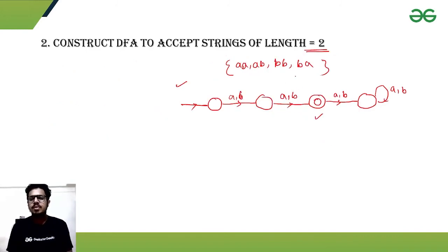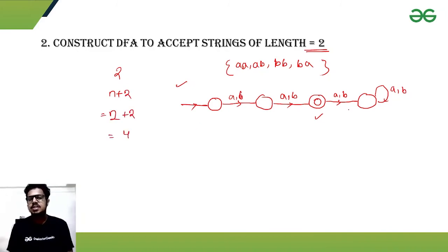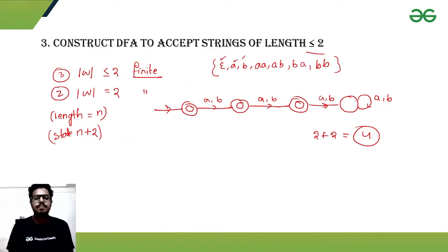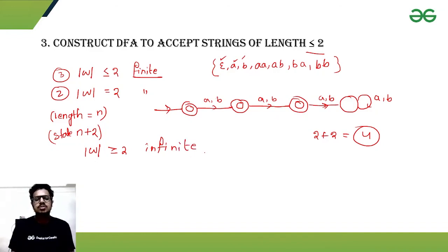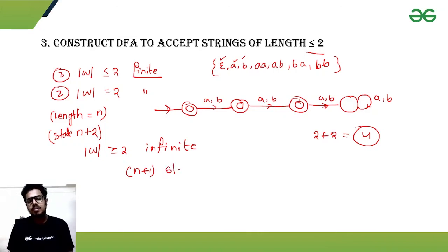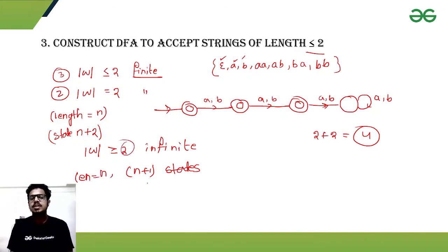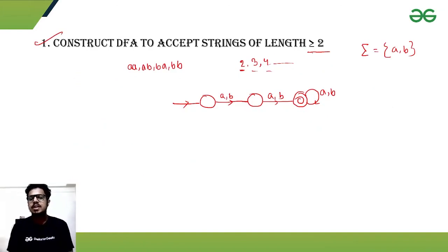In the previous example too, length equals 2, so we need n + 2 = 4 states. Finally, whenever the length is greater than or equal to 2, that gives an infinite language with infinitely many strings. For an infinite language, we need n + 1 states. Here our length is 2, so we need 2 + 1 = 3 states, which matches Example 1 with its 3 states.